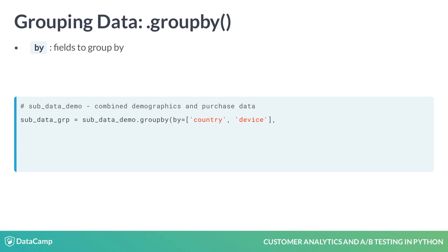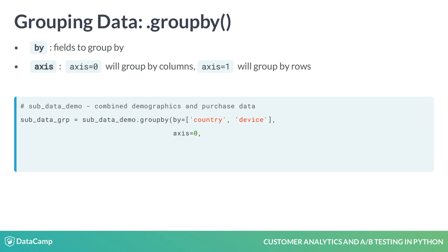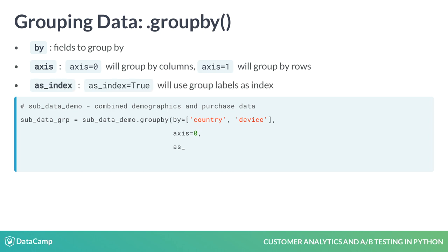Here we will be grouping by country and device. The next relevant argument is Axis, which specifies whether we are grouping by row or column values. The default value of 0 groups by columns, which is what we will do for the remainder of the course. The other argument of interest is AsIndex. By default this is true, which means that the GroupBy fields become indices. We want to set this to false so that this does not happen.